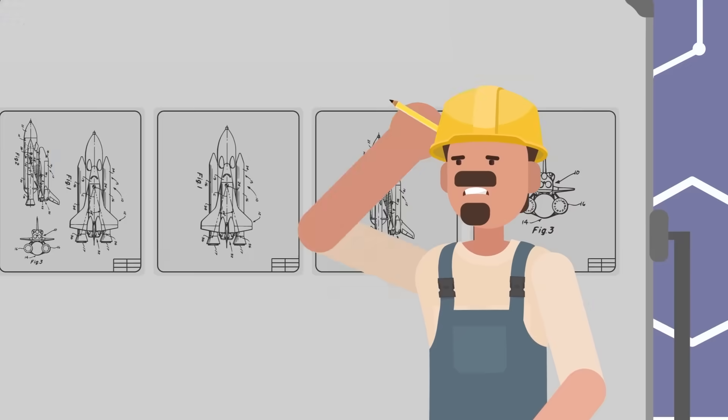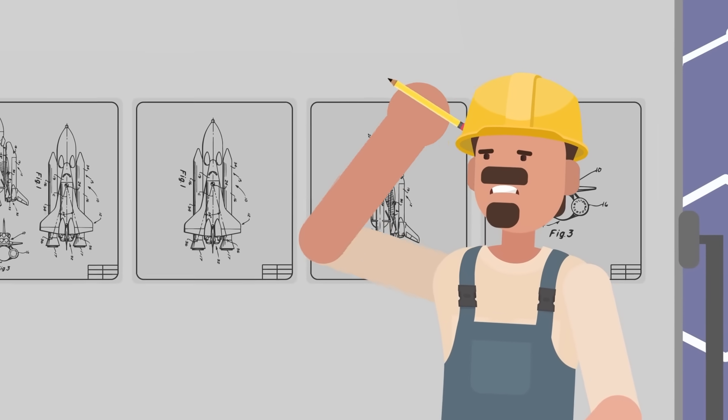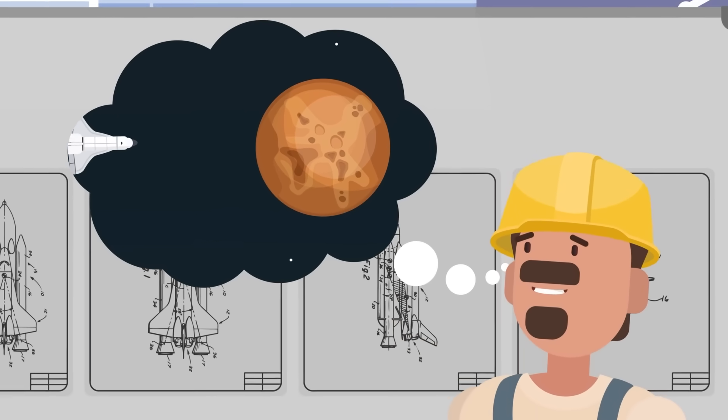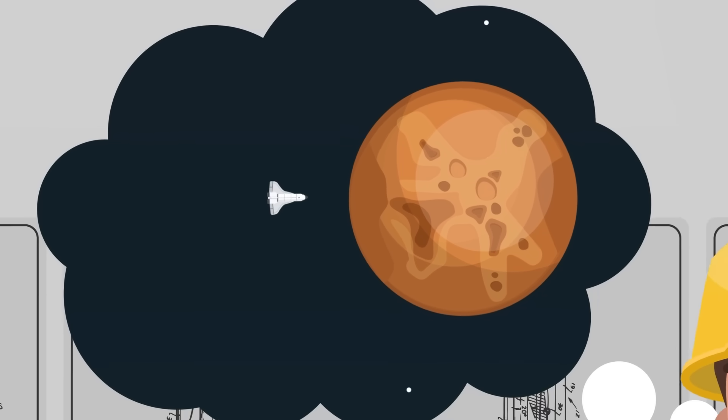This is a key part of why countries keep sending unmanned missions to Mars to collect surface samples. But rovers and robot dogs can only do so much, and so the race is on to land the first manned mission to Mars, and get them back of course. That's important too.